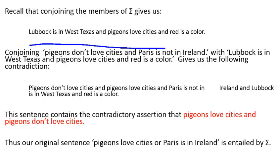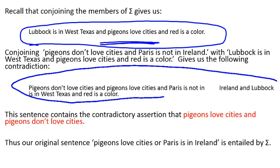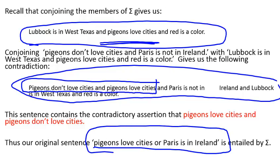To see why 'pigeons love cities or Paris is in Ireland' follows from sigma, we check whether its negation combined with the conjunction of sigma's members produces a contradiction. The negation is 'it is not the case that pigeons love cities or Paris is in Ireland,' which is logically equivalent to 'pigeons don't love cities AND Paris is not in Ireland.' Conjoining that with sigma — which contains 'pigeons love cities' — immediately gives a contradiction: pigeons love cities AND pigeons don't love cities. This confirms that our original sentence is entailed by sigma. We'll look at these kinds of things more later on.